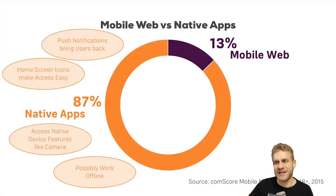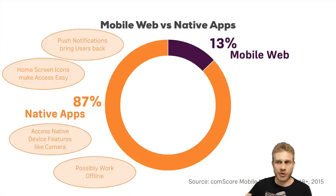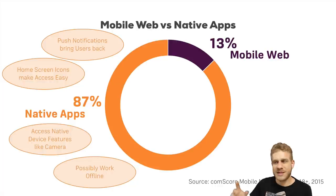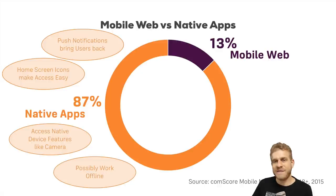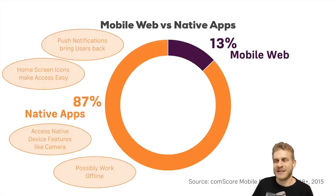The cool thing about progressive web apps is that we can bring all these things to the web too. But that's not the only argument for the mobile web. Let's have a look at some arguments against native apps. One argument is that you have to learn two languages if you want to support iOS and Android, or you need multiple developers. It would be nicer if you could just write an application in HTML, CSS, and JavaScript.